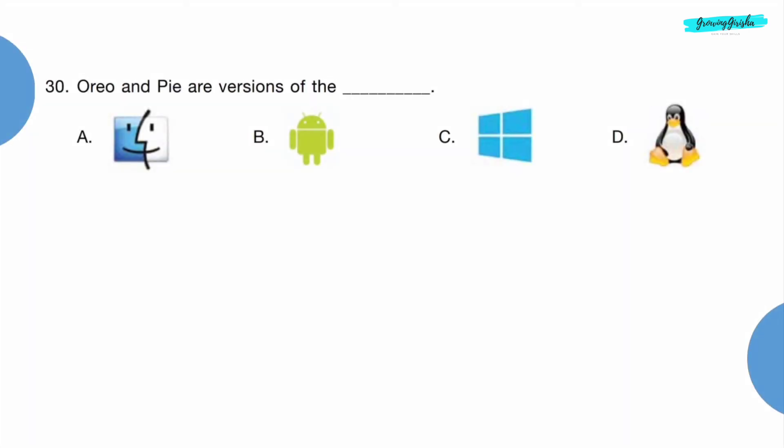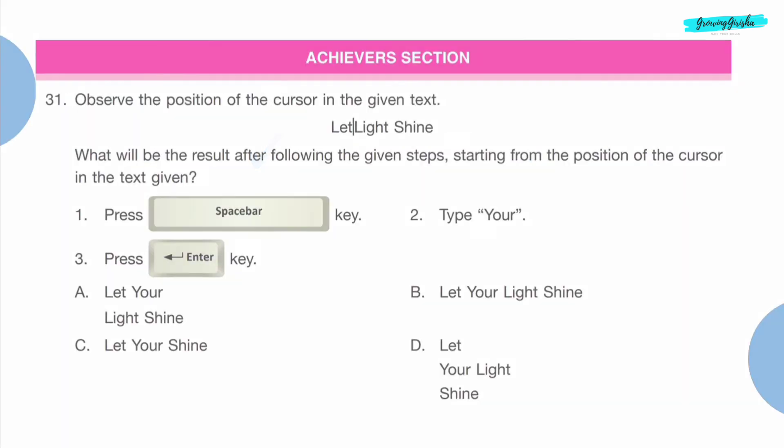Question 30: Oreo and Pie are versions of the dash. Option B, Android. Achievers section.